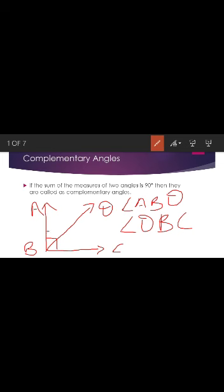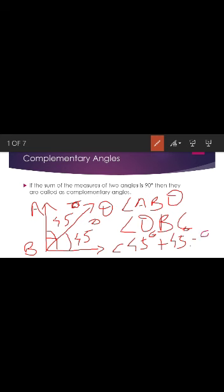Suppose angle ABD is 45 degrees. Then angle DBC should also be 45 degrees, because the total angle ABC is 90 degrees. So if angle ABD is 45 degrees, then angle DBC is also 45 degrees. That means 45 degrees plus 45 degrees equals 90 degrees.